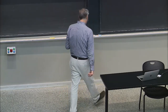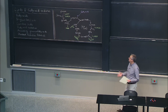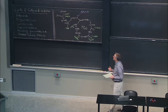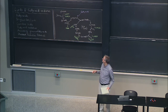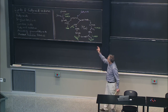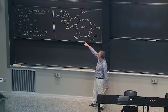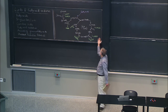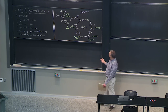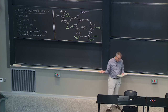Last time we discussed the TCA cycle, which allows us to take glucose and completely oxidize those six glucose carbons into CO2. Glycolysis converts glucose into two pyruvate, each with three carbons. Pyruvate dehydrogenase releases the first carbon as CO2 and generates acetyl-CoA. That acetyl-CoA enters the TCA cycle where two more CO2s are released, one at the isocitrate dehydrogenase step and one at the alpha-ketoglutarate dehydrogenase step.